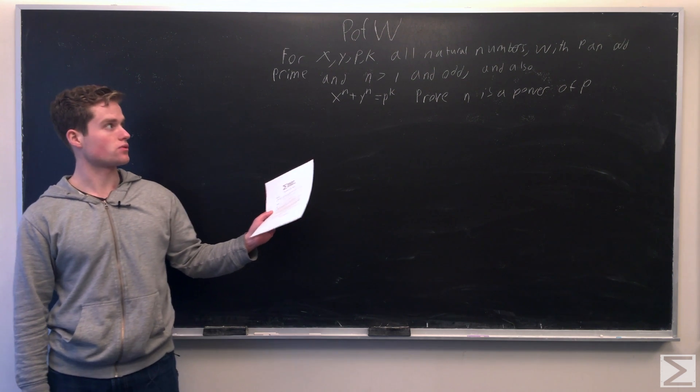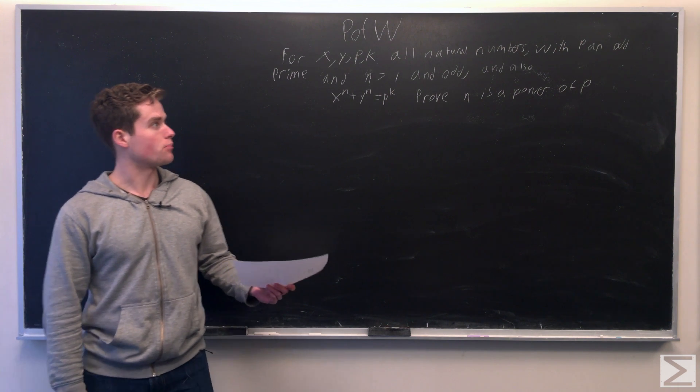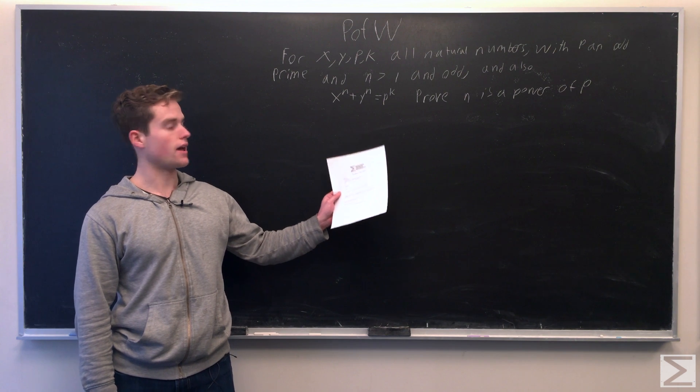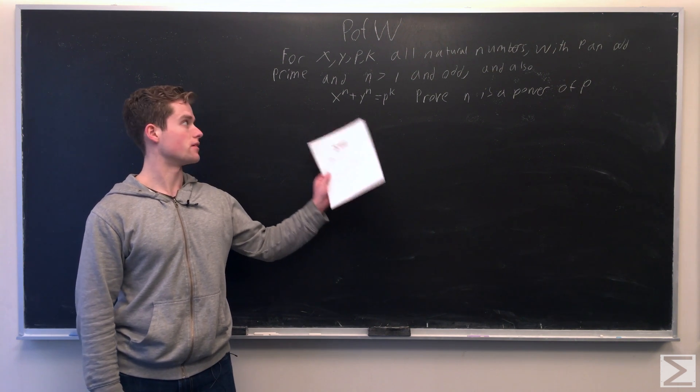So given x, y, p, k, all natural numbers, p is an odd prime, n is greater than 1 and odd. We want to prove that n has to be a power of p in this equation.